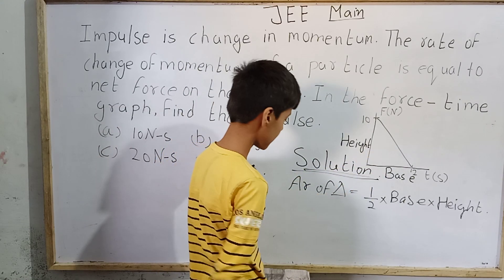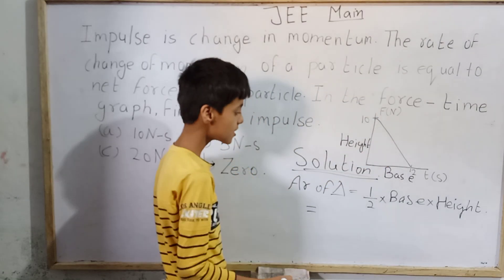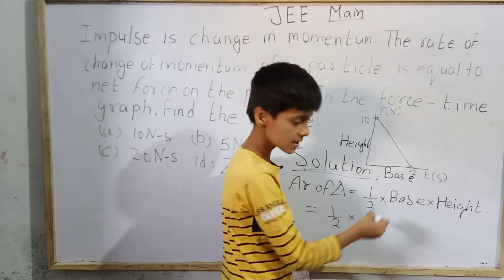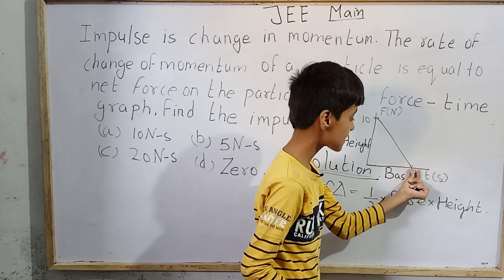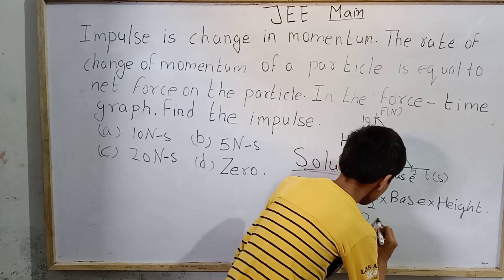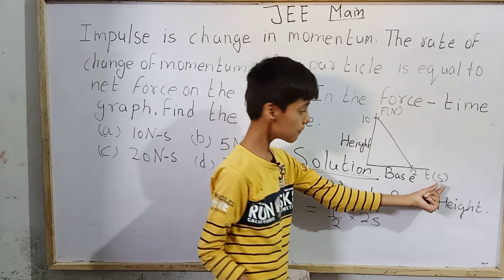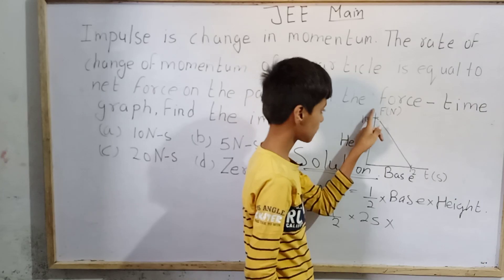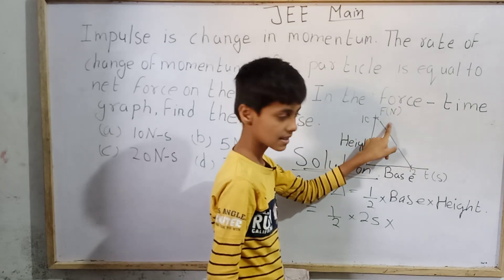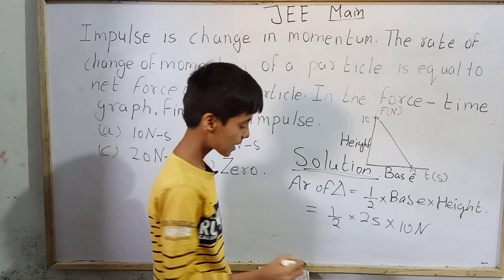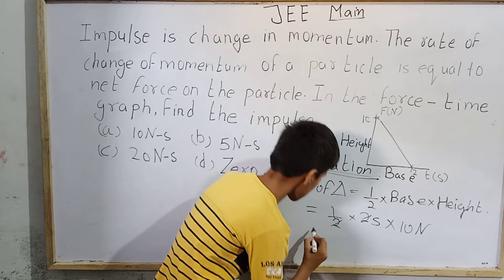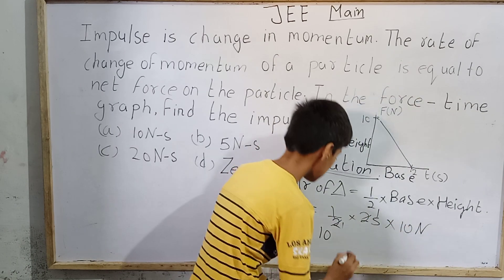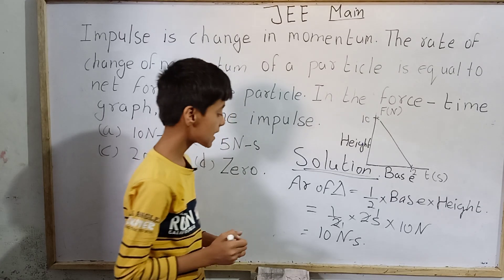Now, finding the area of this triangle: it equals 1/2 into base into height. The base is 2 seconds, since this is a force-time graph and time extends up to 2 seconds. The height is 10 newtons, since the force goes up to 10 newtons. So the area equals 1/2 into 2 seconds into 10 newtons. The 2 in the numerator and denominator cancel, giving us 1 into 10, which equals 10 newton-seconds. The area of the triangle is 10 newton-seconds.